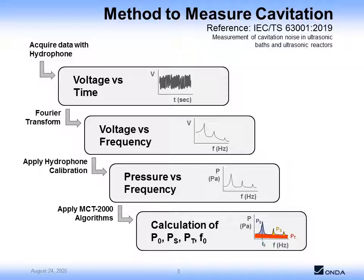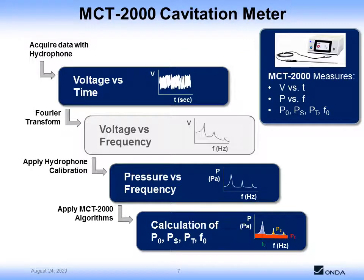Now you have SI units on both x and y-axis. And the pressure spectrum can be analyzed to quantify the pressure from the stable cavitation, transient cavitation, and the direct field. The instrument used in this study is called the MCT2000, which follows this method and saves the following layers of data: namely, the voltage waveform, the pressure spectrum, and the calculated parameters.